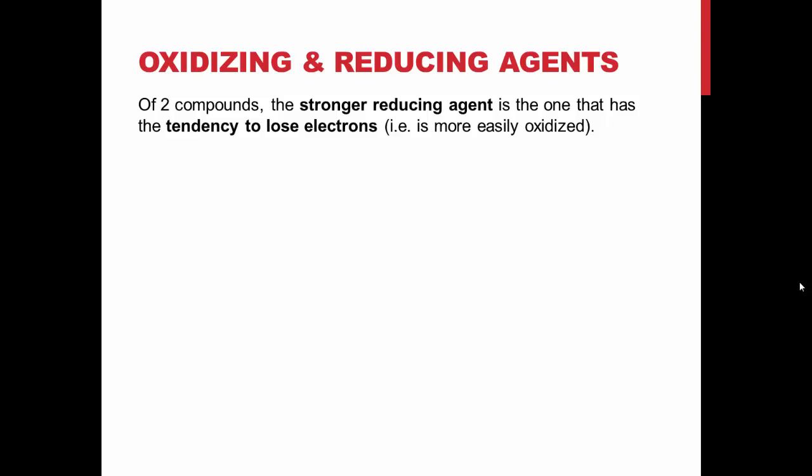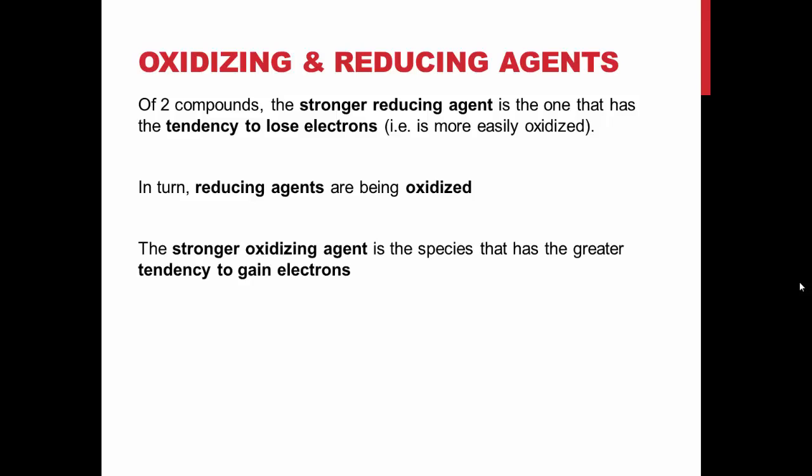Of two chemical species, one will have a greater ability to lose electrons, becoming oxidized. This compound is a stronger reducing agent, and will cause the other species to be reduced. In turn, the other species will be a stronger oxidizing agent, with a better ability to gain electrons and become reduced, causing the first species to become oxidized.